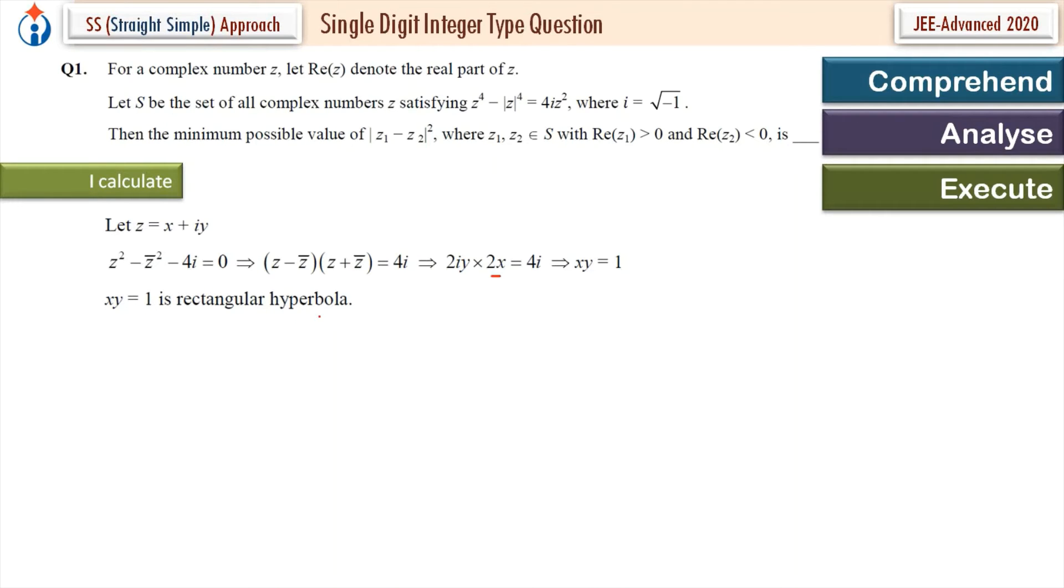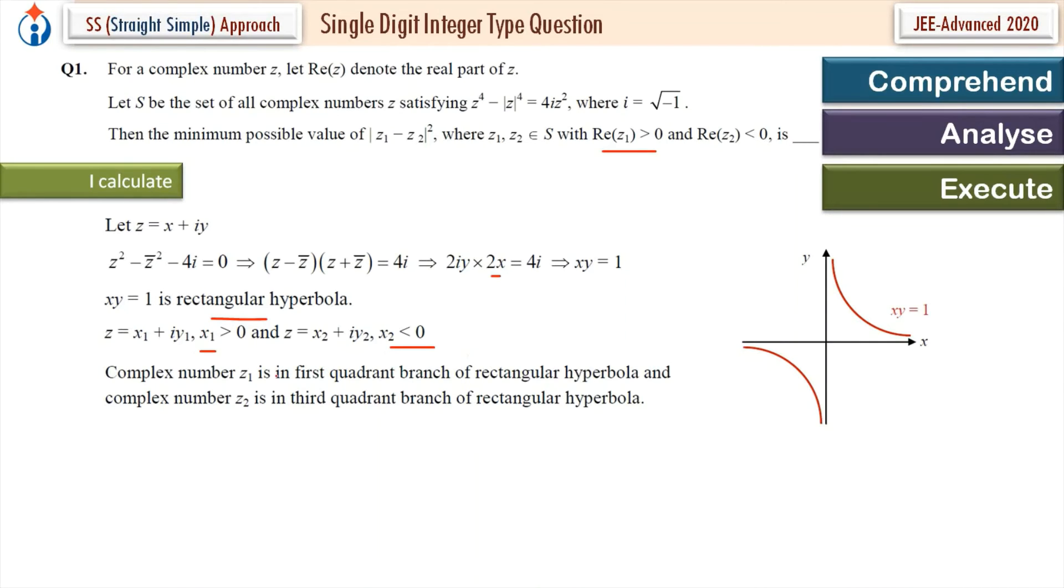Now XY equal to 1 is a rectangular hyperbola. We know that, and that's how it looks. That's a graph of XY equal to 1. Now if I say this, X1 is greater than 0, real part of Z1 is given greater than 0, and X2 is less than 0. Real part of Z1 is in first quadrant here. Complex number Z2 is in third quadrant.